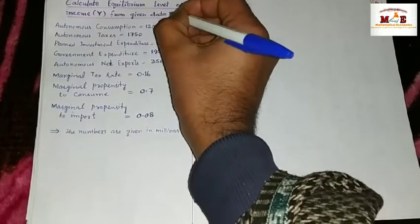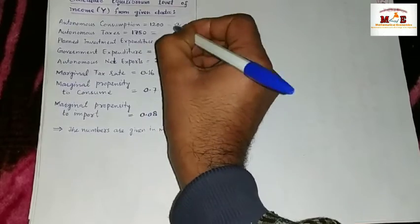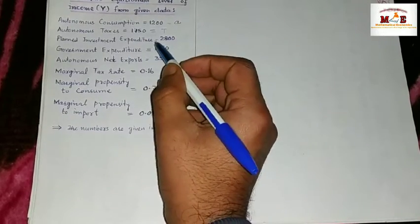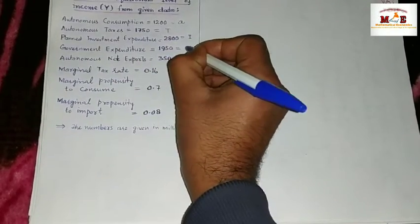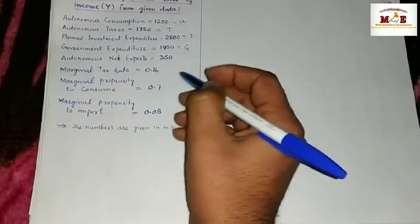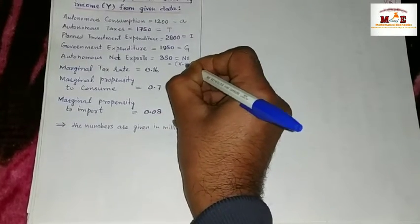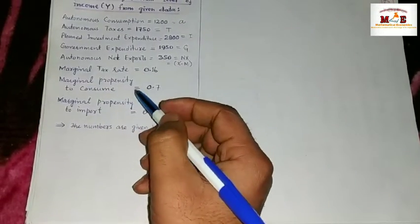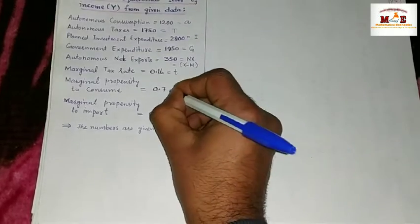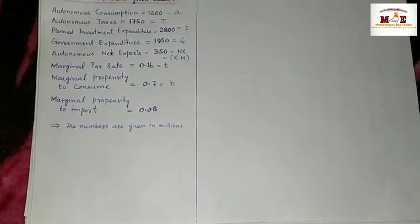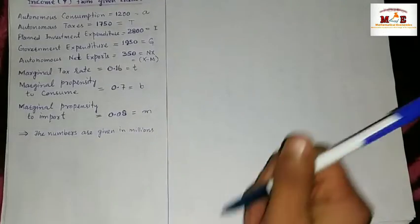Autonomous consumption is represented by the letter 'a', autonomous taxes by 'T', planned investment expenditure by capital 'I', and government expenditure by capital 'G'. Net exports are represented by NX, or written as X minus M (exports minus imports). The marginal tax rate is represented by small 't', marginal propensity to consume by small 'b', and marginal propensity to import by small 'm'.